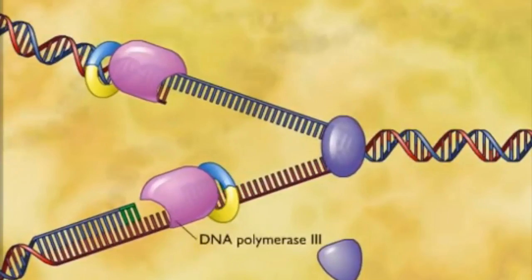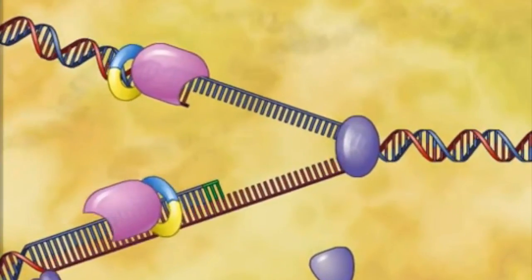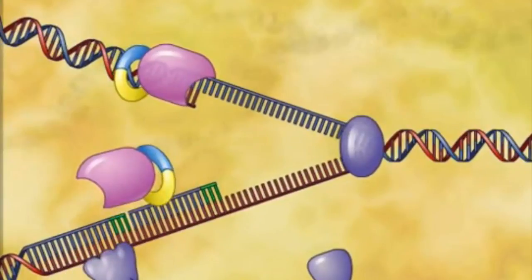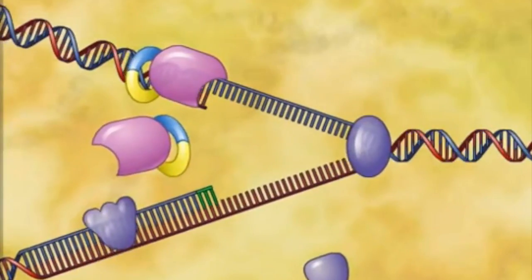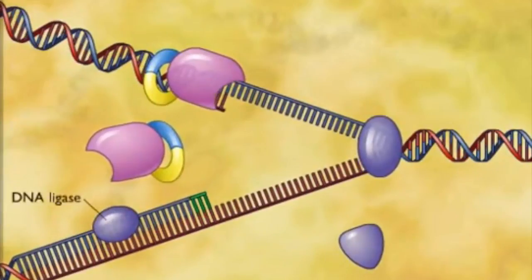The leading strand is continuous and only needs one RNA primer. Helicase continues to unzip the DNA. DNA polymerase I, DNA polymerase III, and ligase connect the Okazaki fragments on the lagging strand.